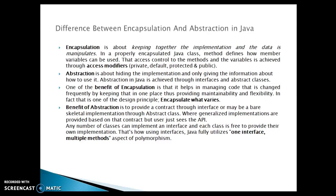A benefit of abstraction is to provide a contract through an interface or a bare skeleton implementation through abstract classes, where generalized implementations are provided based on the contract, but the user just sees the API. Any number of classes can implement an interface and each class is free to provide its own implementation. That's how, using interfaces, Java fully utilizes one interface and multiple methods — that is the aspect of polymorphism.